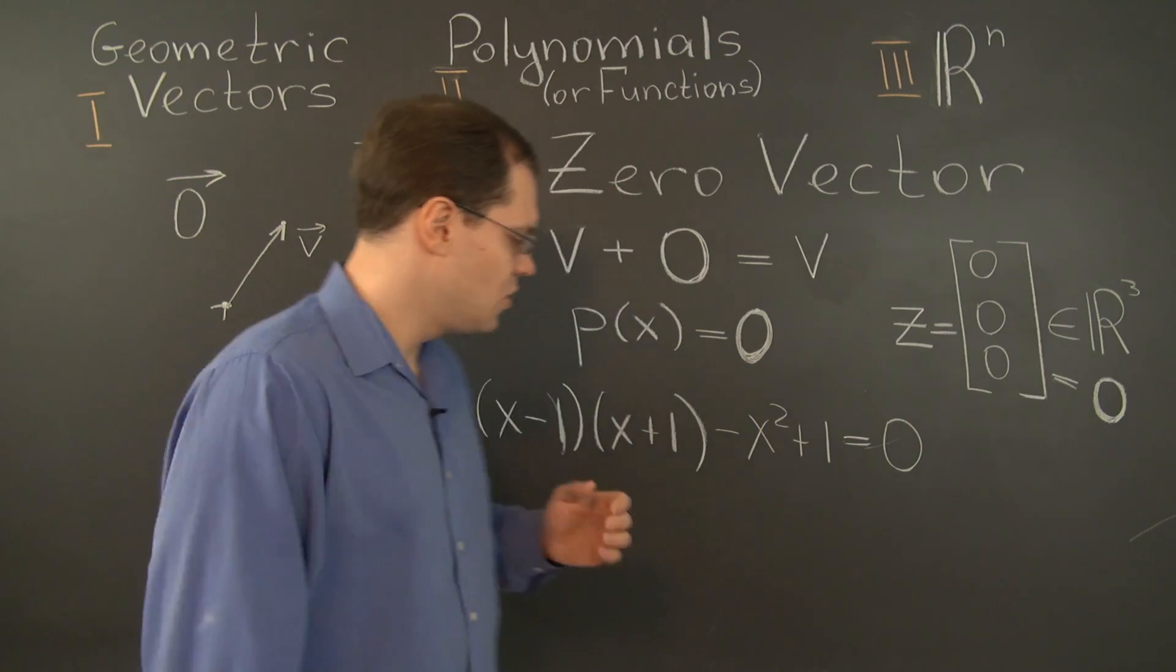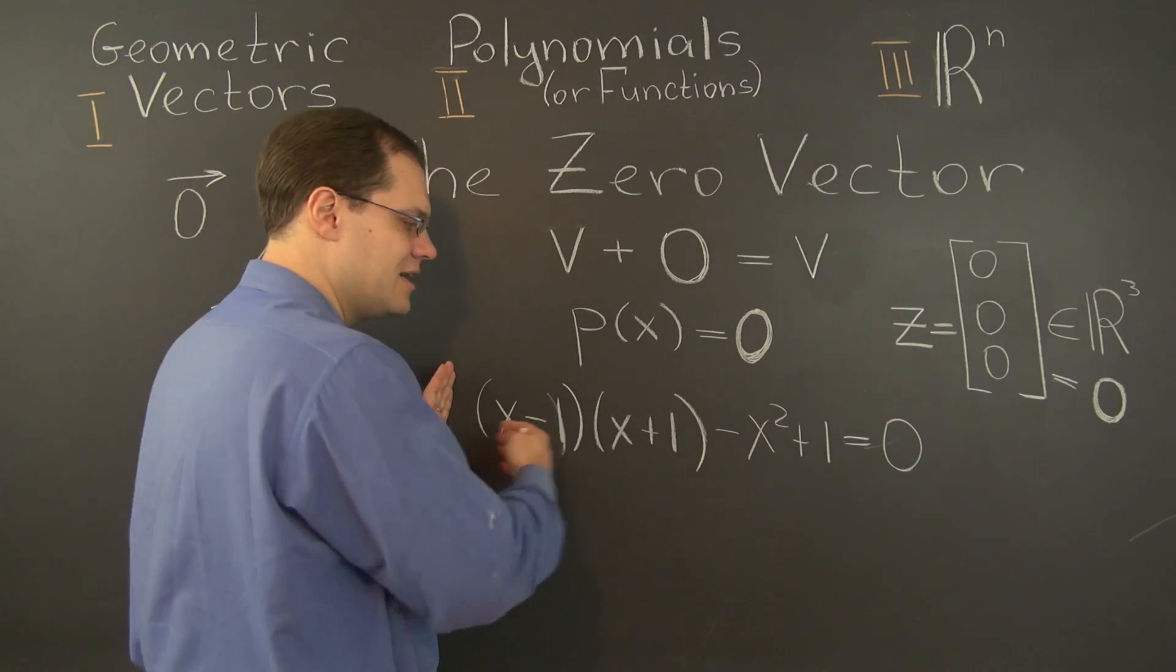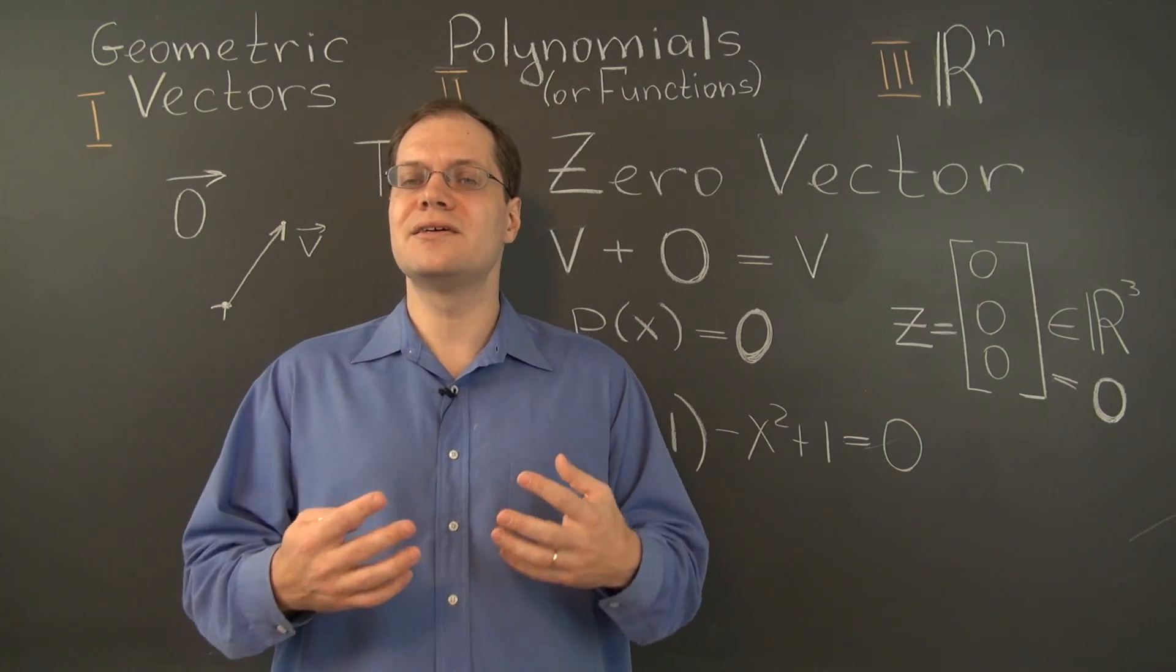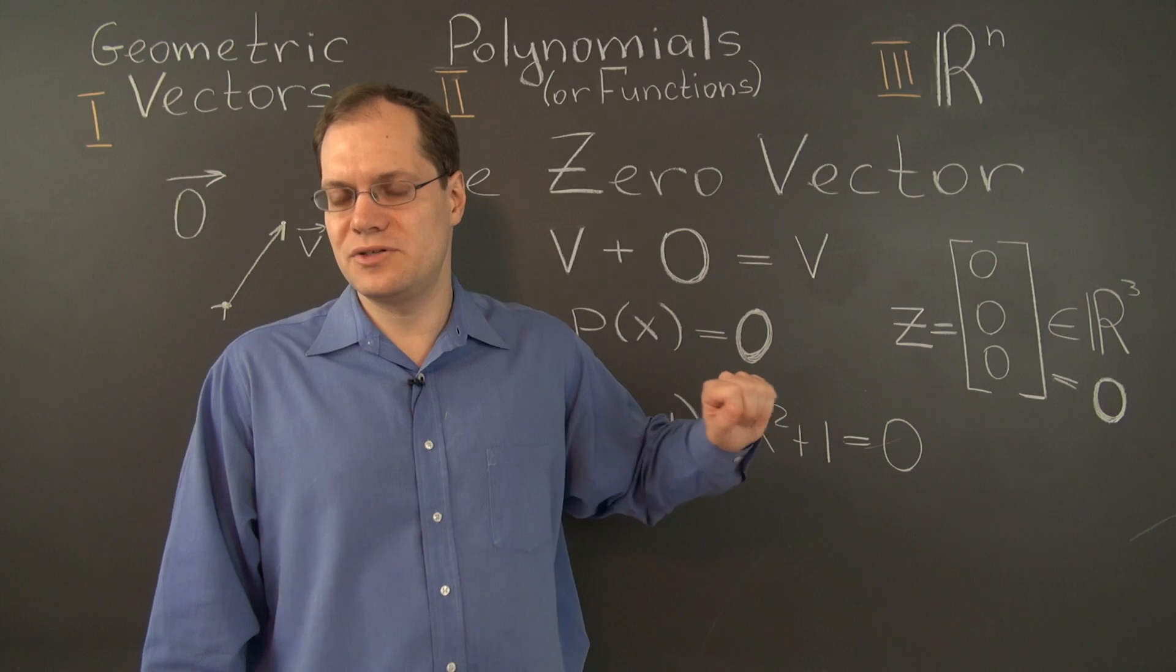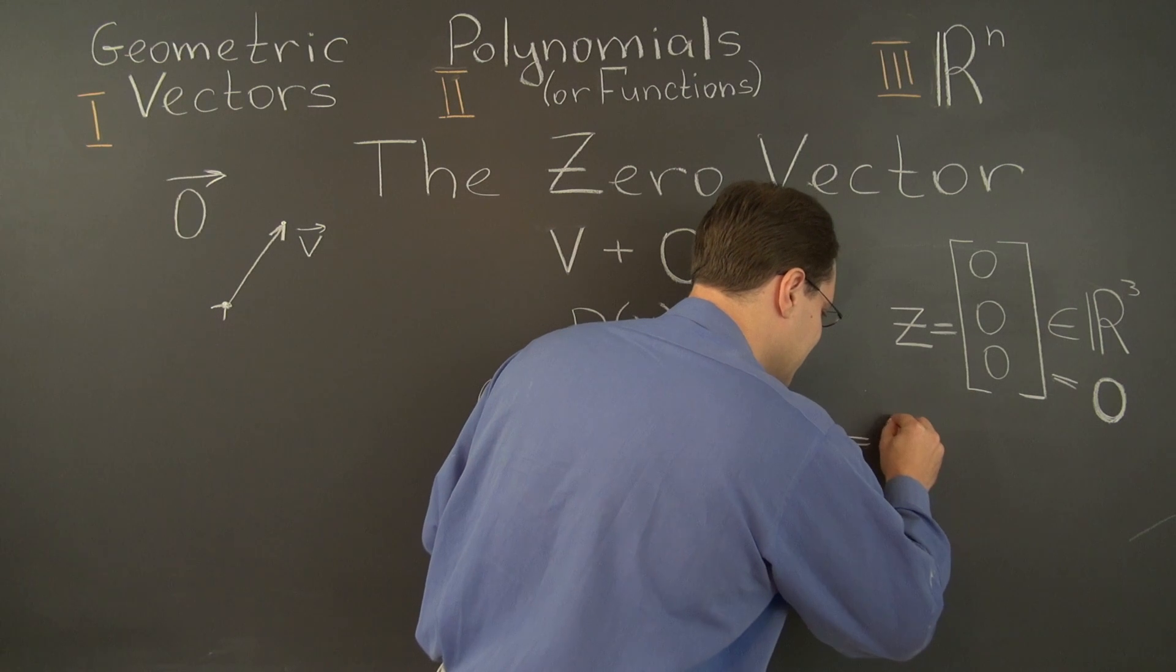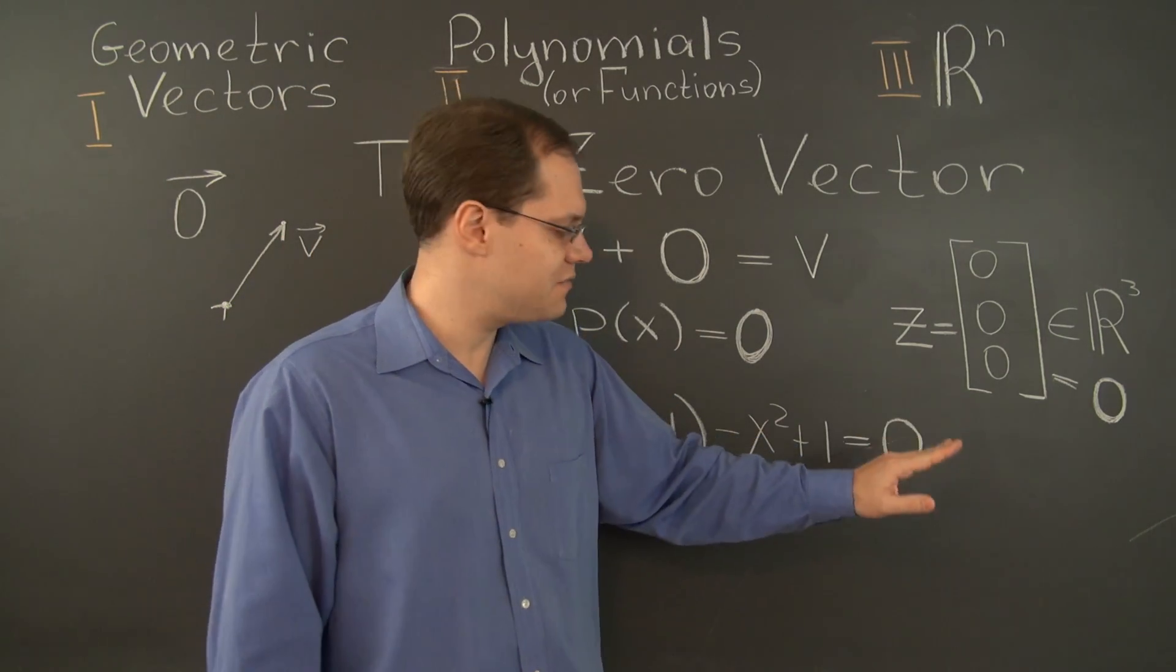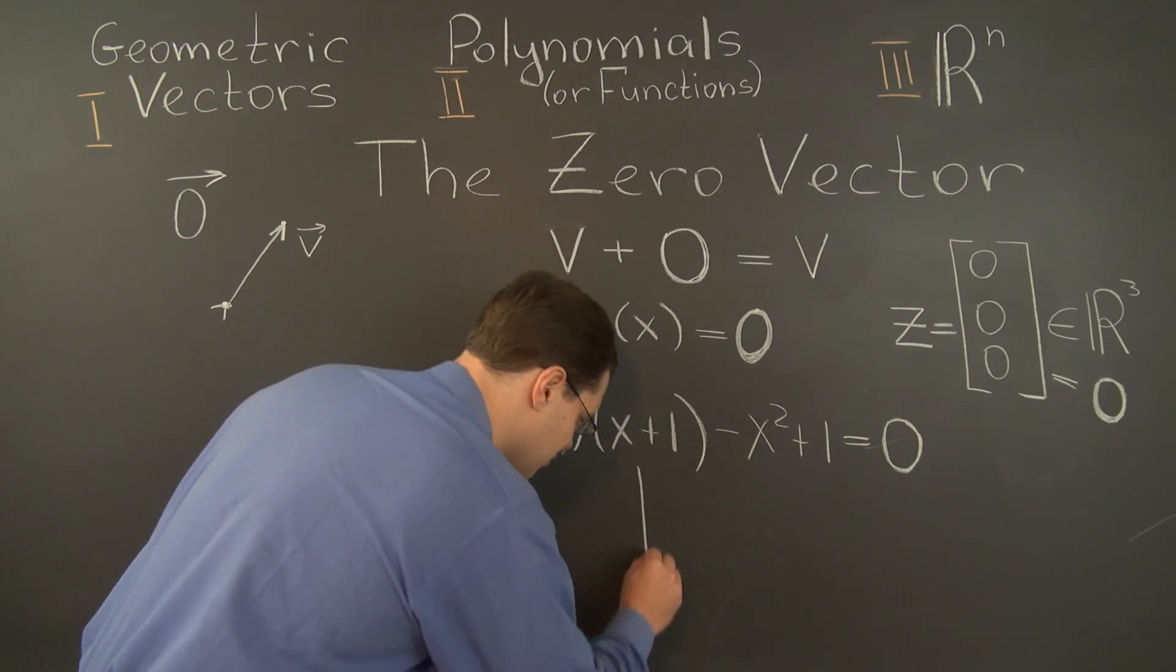But when you're studying linear algebra, what you have on the left is a linear combination of three polynomials. When you combine polynomials in a linear combination, the result is another polynomial. So this right here is not 0 the number when you're studying linear algebra, this is 0 the polynomial. We have a vector on the right hand side. We have a linear combination of vectors on the left hand side. So it is a vector on the right hand side. What you have on the right hand side is 0 the polynomial.